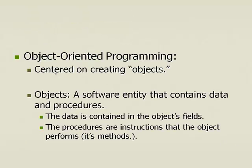Object-oriented programming focuses on creating objects, and an object is a software entity that contains data and procedures. Data is contained in an object's fields — field, variable, same thing. Procedures are instructions that the object performs, so a procedure is a method. So you've got variables and you've got methods in object-oriented programming.